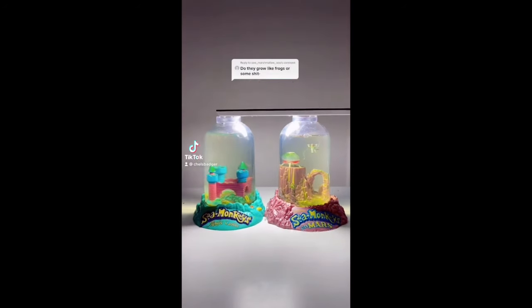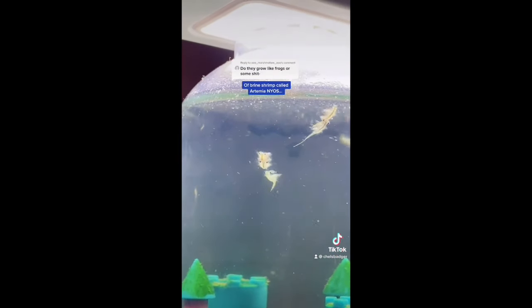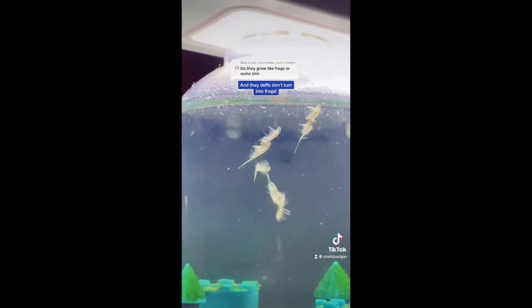Sea monkeys are not tadpoles so they do not turn into frogs. Sea monkeys are an artificial hybrid breed of brine shrimp called Artemia NYOS. This is what they look like full grown and they just don't turn into frogs.